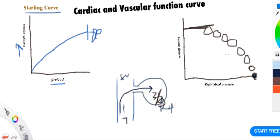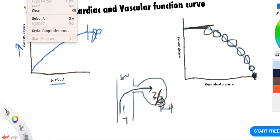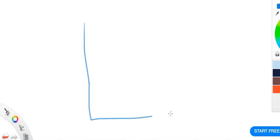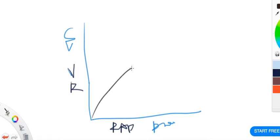Okay, now just draw our curve - this is our vascular function curve. Now we'll just combine both of them and then we'll understand the curves. Here we have stroke volume, we have venous return, we have right atrial pressure, and we have preload.